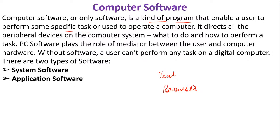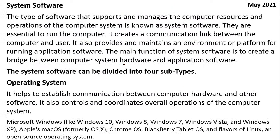Softwares are of two types: system software and application software. System software are those that help you manage the computer resources — anything that is attached to the computer: your monitor, mouse, keyboard, printer, plotter. All these things are called computer resources. To manage them, you use system software. System software is the bridge between computer hardware and application software.